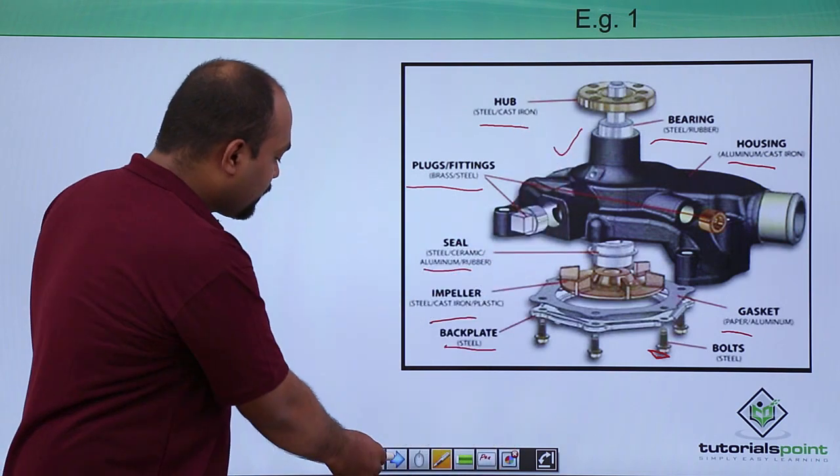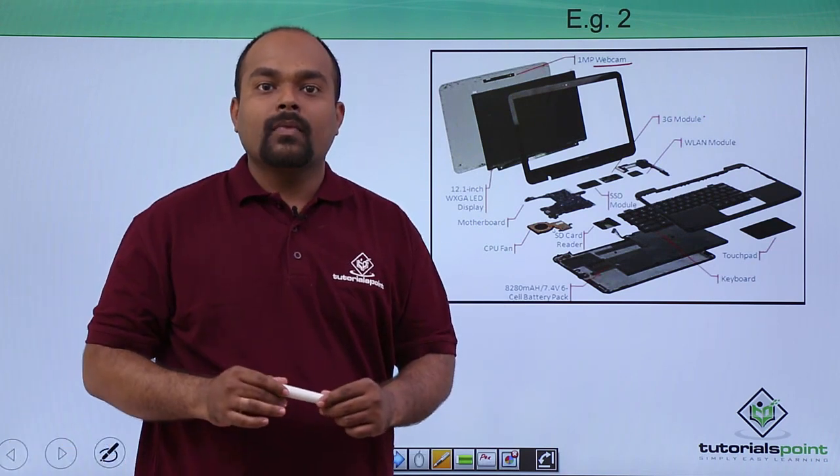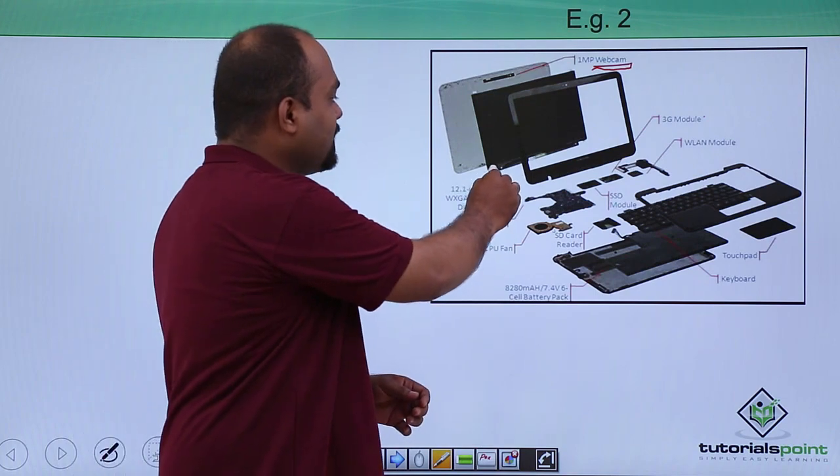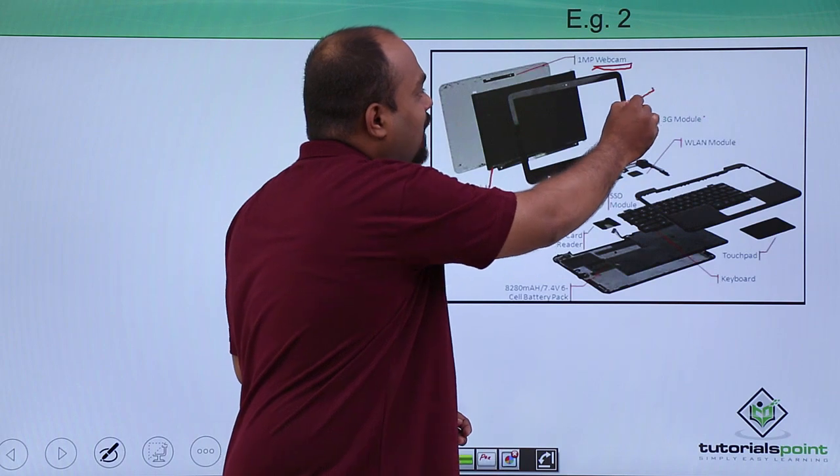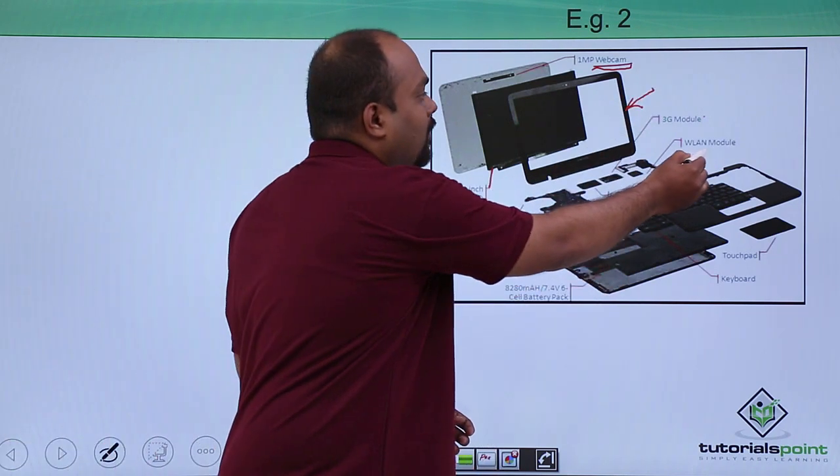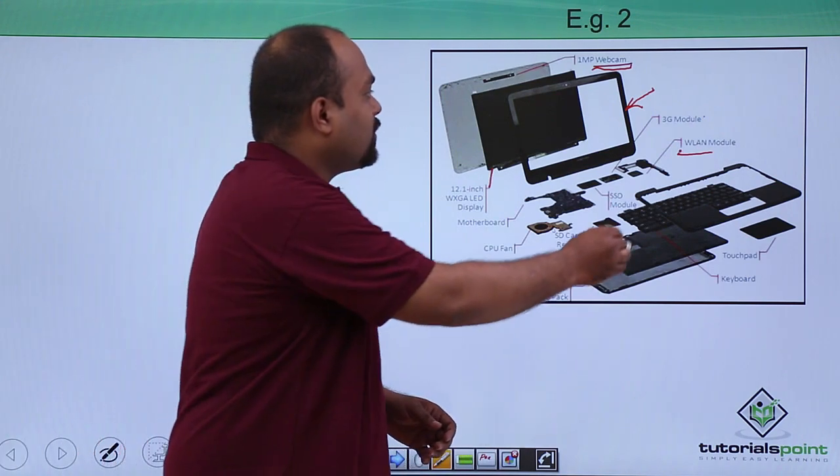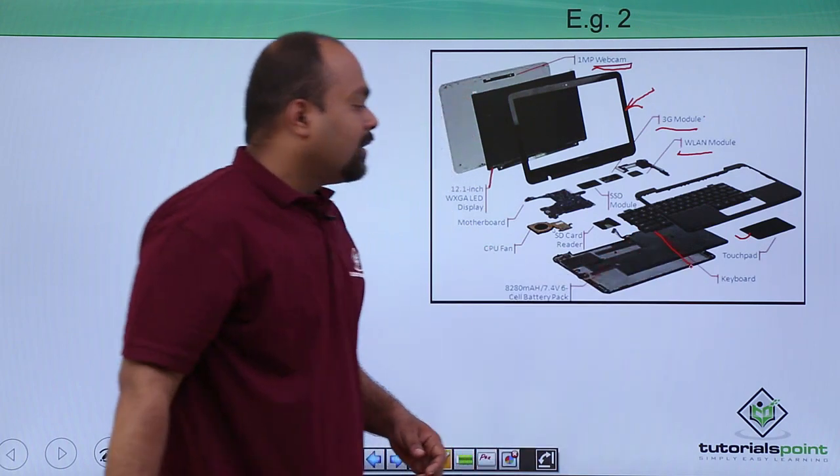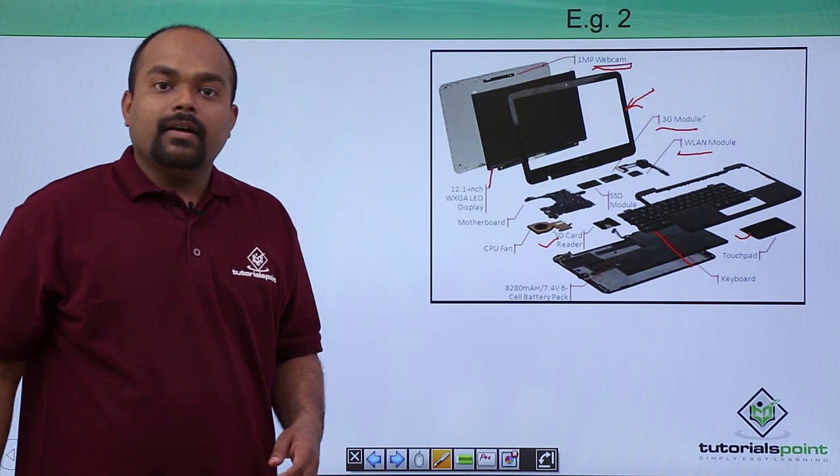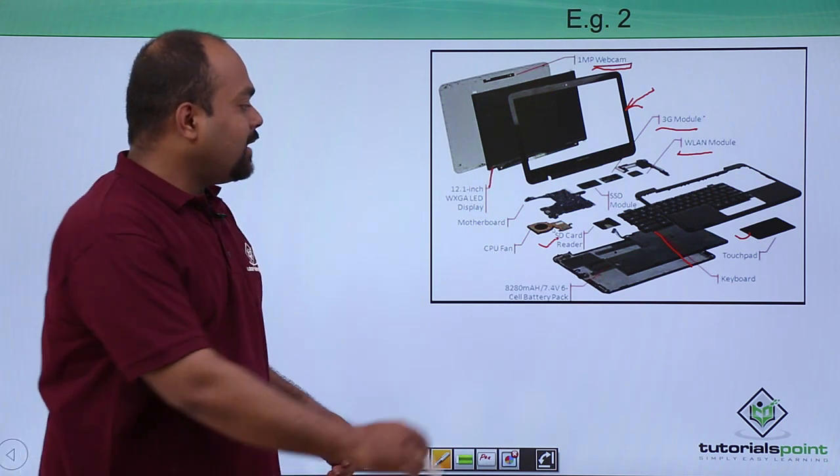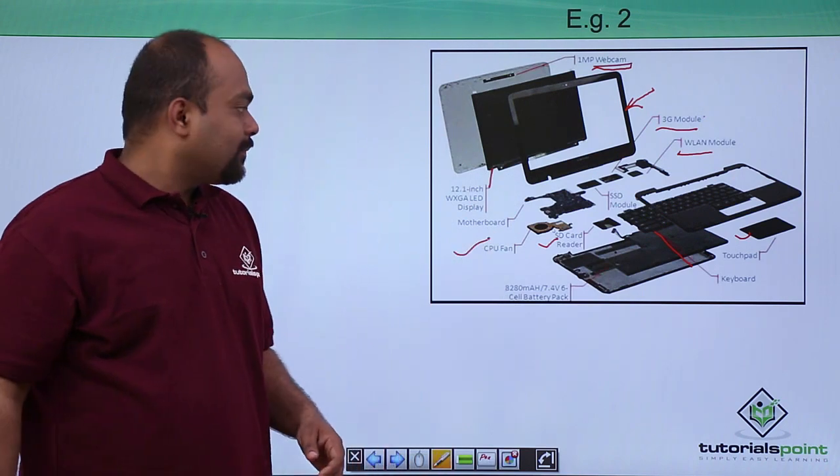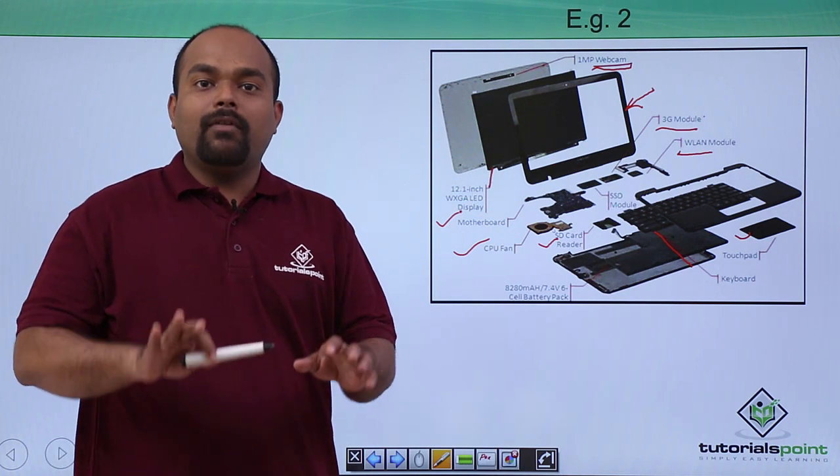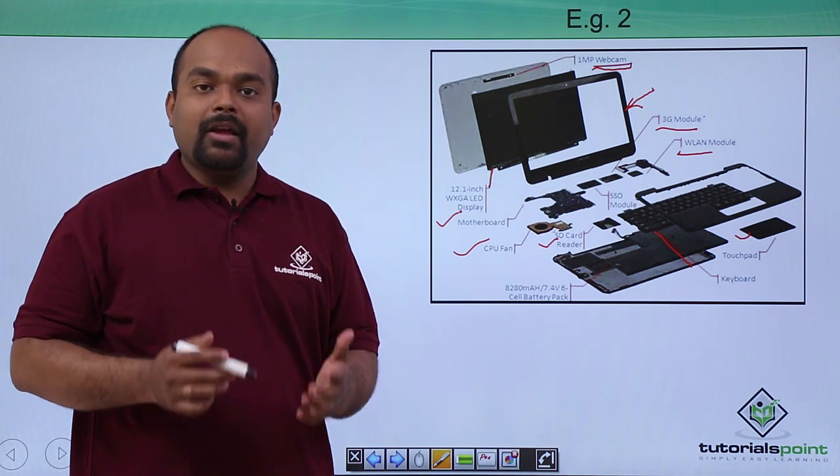Next example: take a common example like a laptop. What is required for a laptop? Webcam, LED screen, LED screen guard, WLAN module, 3G module, touchpad, keypad, SD card reader or SD card slot, fan, CPU fan, and motherboard. All these components are required to manufacture one laptop. That is nothing but the bill of material.